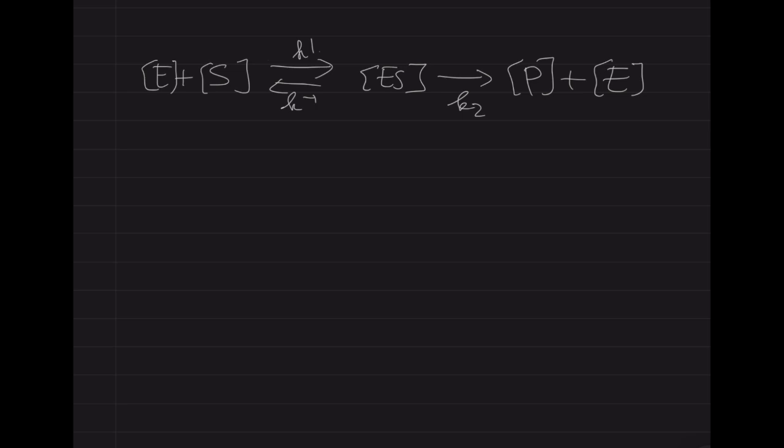First of all, we need to know that we have an enzyme E and a substrate, and the enzyme plus the substrate gives you the enzyme-substrate complex. This is a reversible reaction, so that's why we have a forward reaction K1 and a backwards reaction K-1.